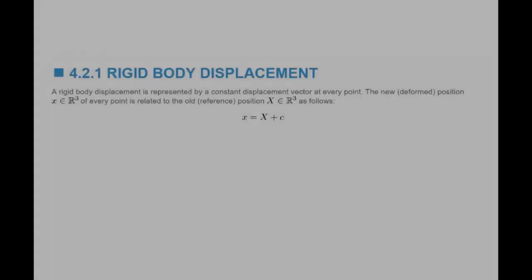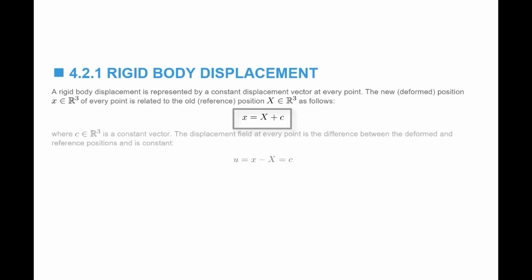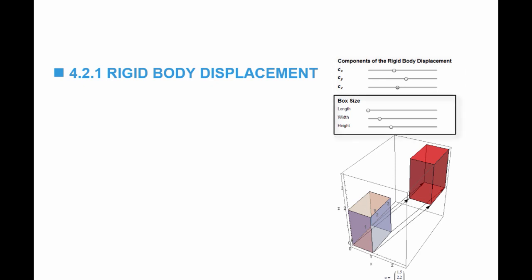In the following section, we are going to cover some simple examples of deformation. The first example is a rigid body displacement. A rigid body displacement is represented by a constant displacement vector at every point. The new position x is equal to the old position plus a constant c, where c is a vector in R3. The displacement function u is equal to x minus capital X, which equals c. On the course website, you will find a tool where you can specify the three components of vector c and the size of the box, and the tool will draw the box and the displaced box after rigid body displacement.